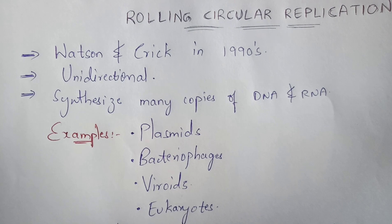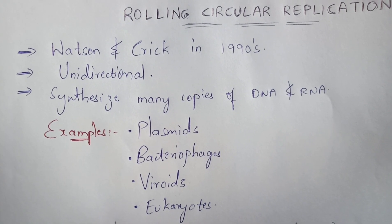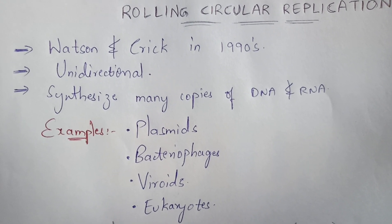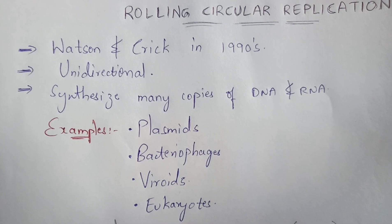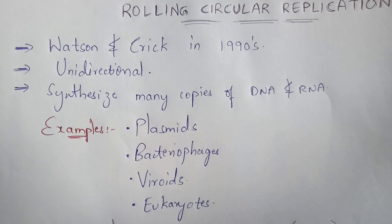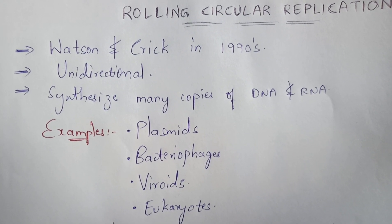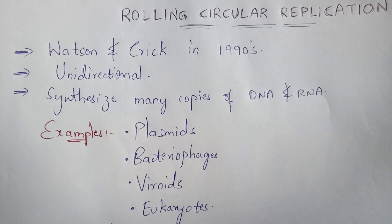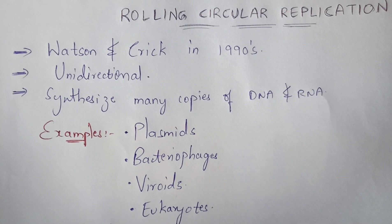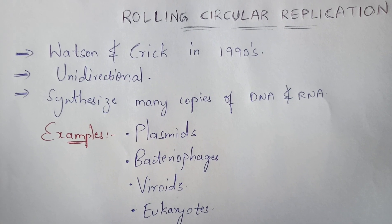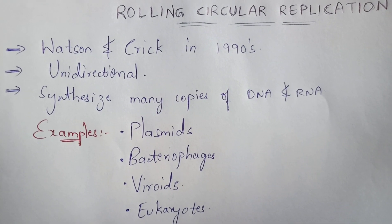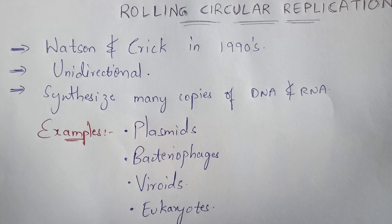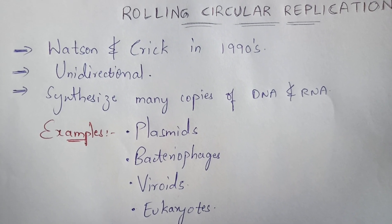The best examples of rolling circular replication are plasmids, bacteriophages, viroids, and prokaryotes. Plasmids mainly consist of DNA, and that DNA undergoes rolling circular replication. Bacteria also consist of such a genome, whether DNA or RNA, and that undergoes rolling circular replication.